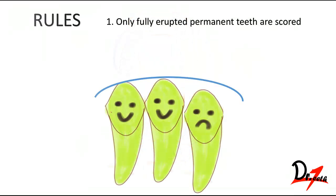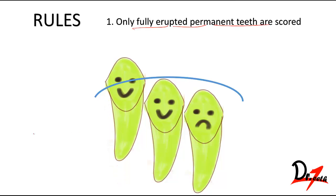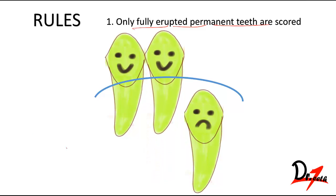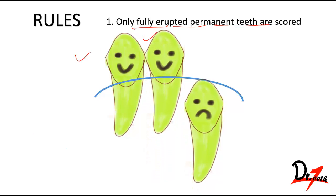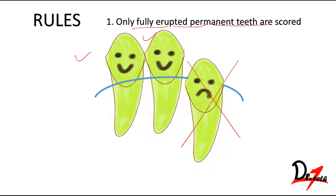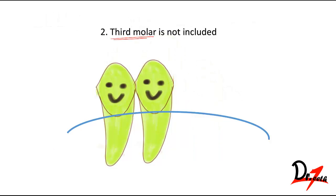Rule one: only fully erupted permanent teeth are scored. If a tooth has erupted, we score it, but if it could not erupt, we will not score it. Rule two: third molar is not included, even if it is erupted.